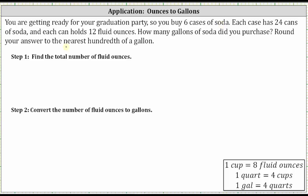To find the total number of fluid ounces, we begin with six cases as a fraction with a denominator of one. Next we multiply by the rate of 24 cans per one case — not the rate of one case per 24 cans — because by multiplying by 24 cans per one case, cases appear in both the numerator and denominator, and therefore cases simplify out, leaving us with cans.